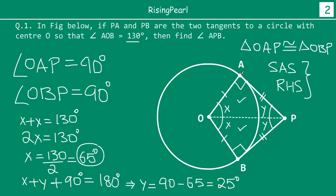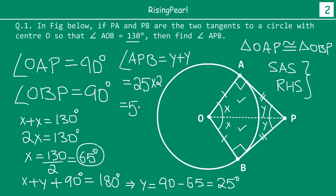We need to find angle APB. Angle APB equals Y plus Y, which is 25 plus 25, equal to 50 degrees. So friends, in this particular example we made use of the congruence of triangles, applied the angle sum of 180 degrees, and found the angle. When proving congruency we used the first theorem — radius and tangent are 90 degrees — and the fact that the two tangents from one external point P are equal.